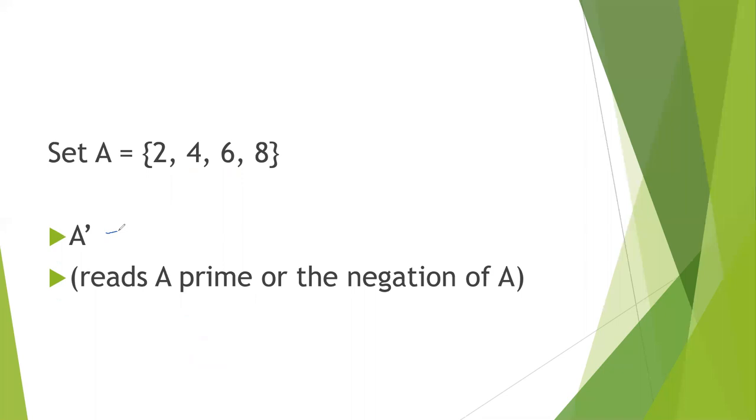Now let's talk about negation. So if we have the set A: 2, 4, 6, 8. To find the negation, first we need to know what our possible elements are. And so that's where this set U comes into play. It tells us what are the possible elements.